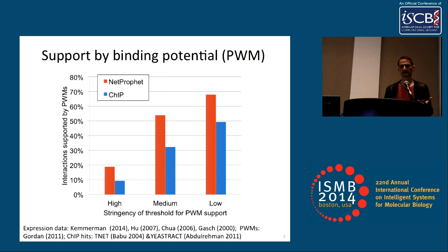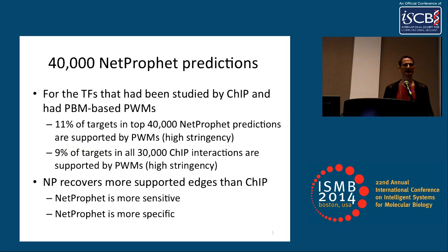We decided to go much deeper into the list and look at the top 40,000 predictions. We found that at the highest stringency level, 11% of the top 4,000 NETPROFIT predictions were supported, and only 9% of all 30,000 CHIP interactions in the T-NET and yeast track databases were supported by binding potential. So NETPROFIT recovers more total edges than CHIP — it seems to be both more sensitive and more specific.